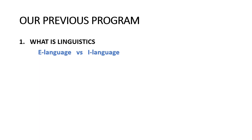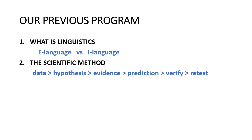Then we gave an example of the scientific method. We saw that the way we work in linguistics is that we start with data. From the data, we draw a hypothesis, we provide evidence for that hypothesis, we make predictions, then we verify the predictions. If the predictions are right, we let it stand. If the predictions are not right, then we need to start again, collect more data, and come up with a new hypothesis.